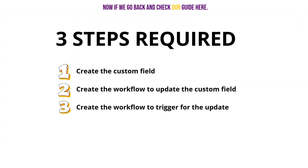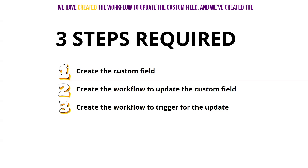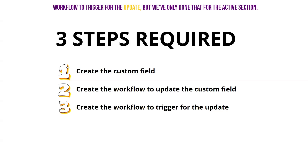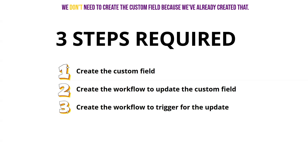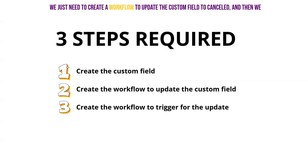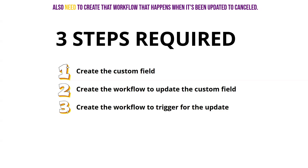Now checking our guide: we've created the custom field, created the workflow to update the custom field, and created the workflow to trigger for the update — but only for the active section. Now we need to do this for the canceled status. We don't need to create the custom field again. We just need a workflow to update it to canceled, and a workflow that triggers when it's been updated to canceled.